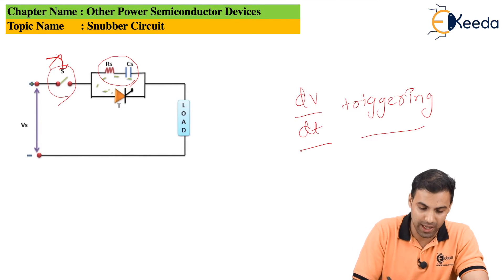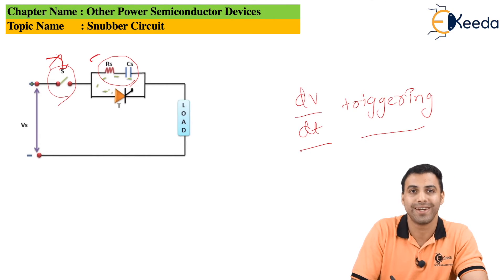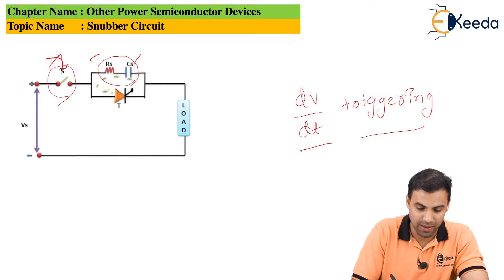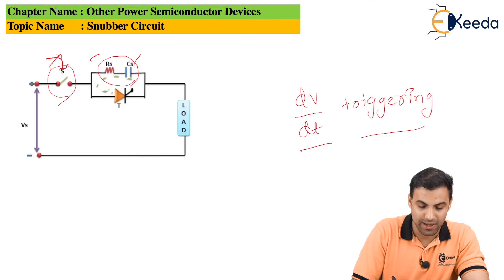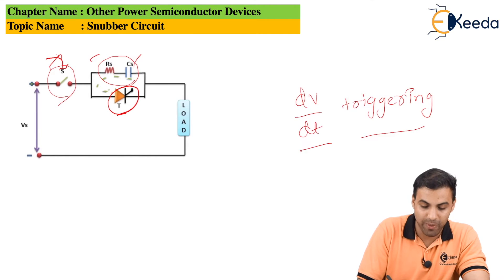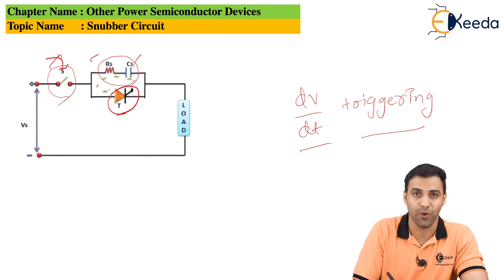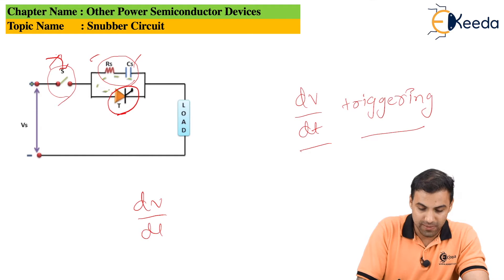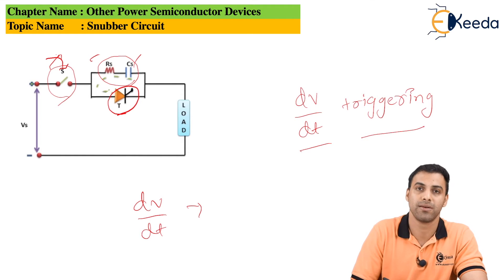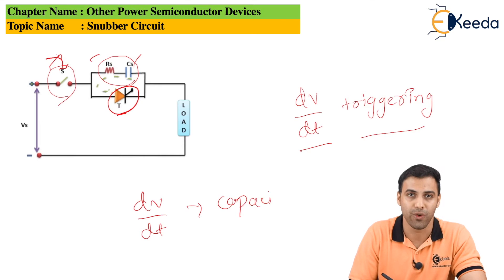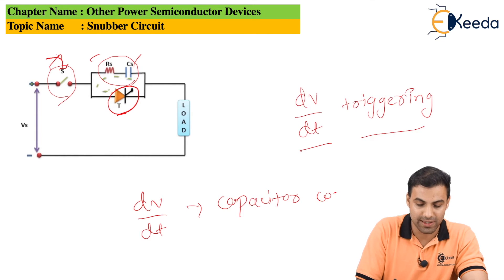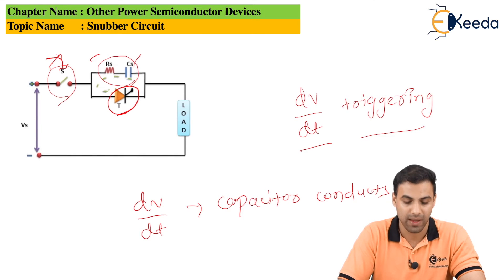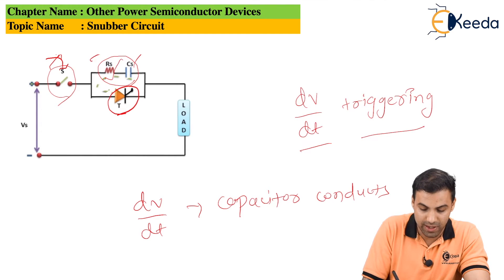Here, by connecting a capacitor and a resistor in parallel with the thyristor, whenever there is an unexpected dv/dt or unexpected rise in voltage with respect to time, the capacitor suppresses the voltage. Because of that, the thyristor does not get triggered and the circuit is protected against dv/dt triggering.